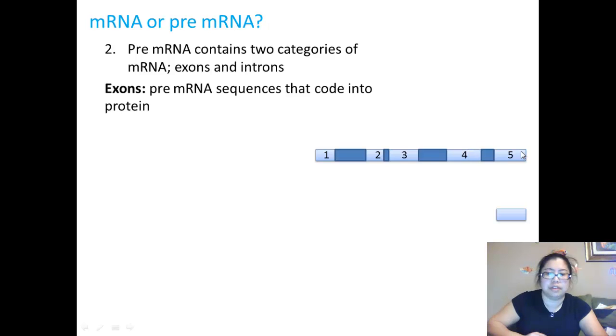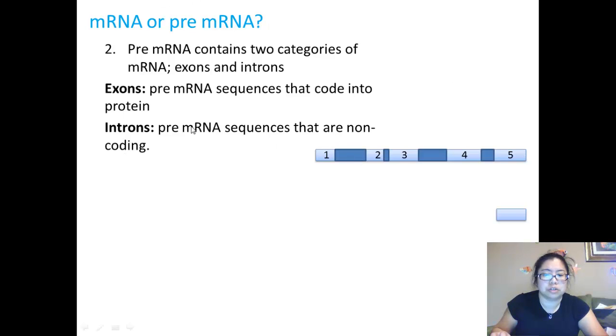One, two, three, four, and five actually contain the code for making the protein. However, in the darker blue are the introns, which are pre-mRNA sequences that are non-coding. So it's okay if these get damaged or not because they are non-coding. They're not responsible for important functions in terms of making a protein.